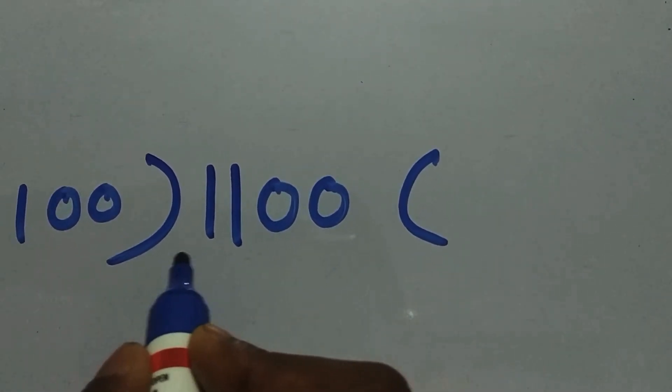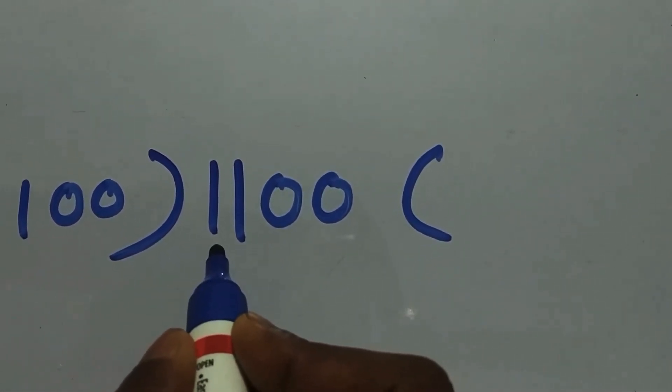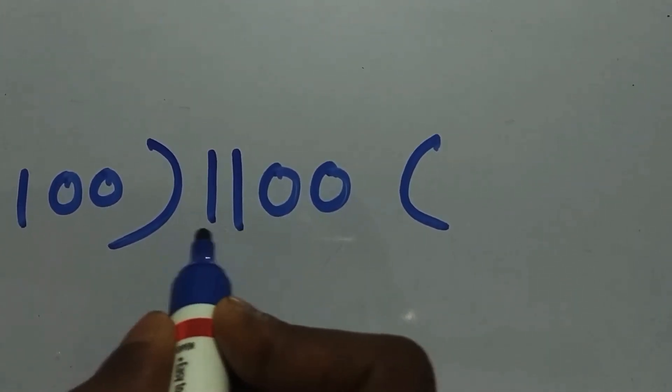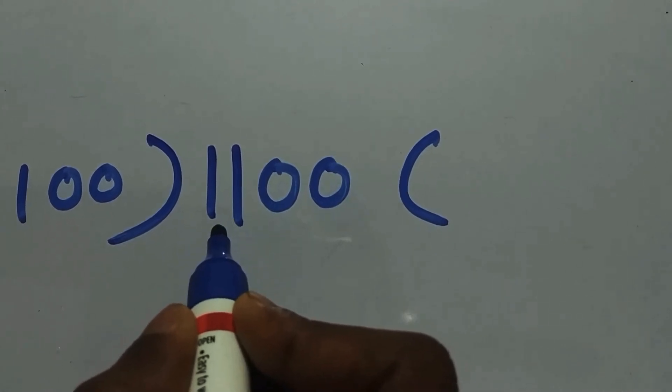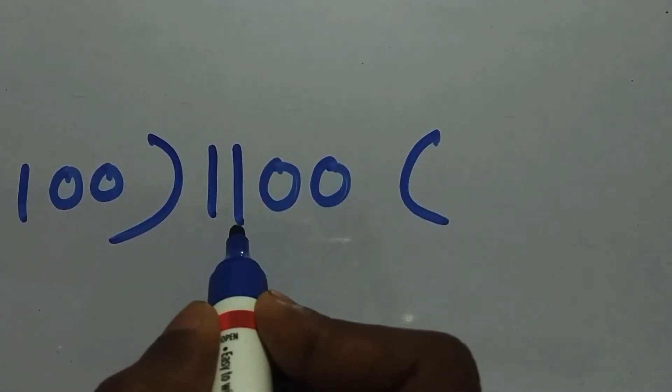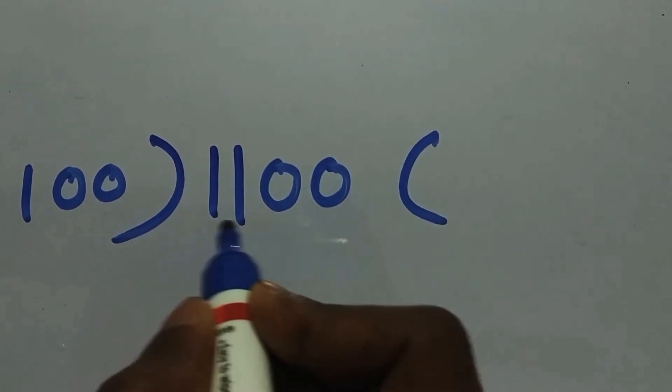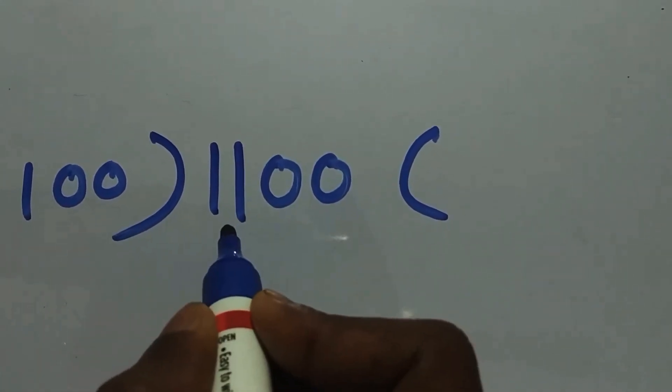So now we'll start from the MSB bit. 1 is not divisible by 100. We need to take these two again and check whether it's divisible by 100 or not. No, it's not divisible by 100, so we need to take 3 bits: 1, 1, and 0. Is it divisible by 100? Yep, it's divisible.